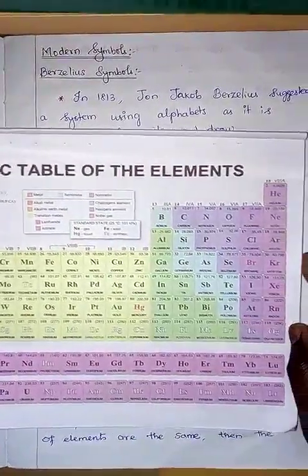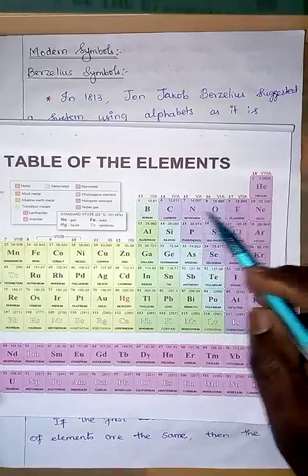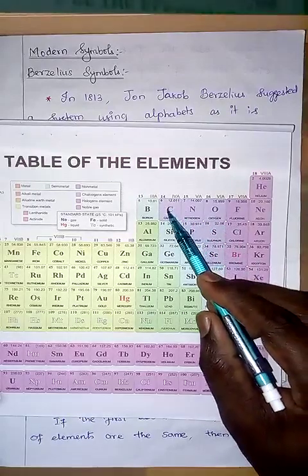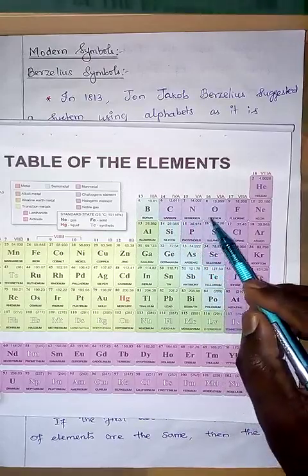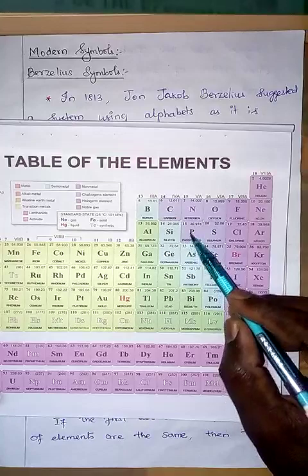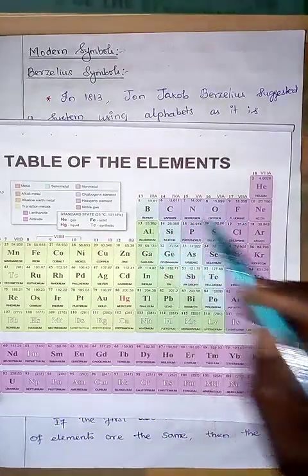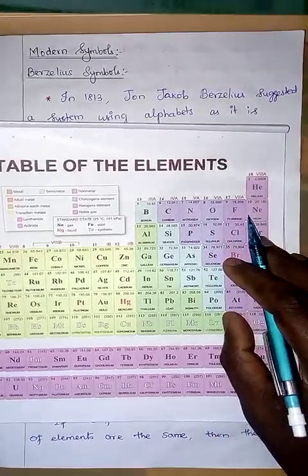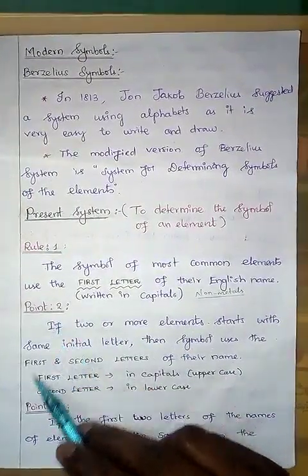Look at this modern periodic table. On your right-hand side you will find non-metals — the violet color area. Most non-metals have a single letter symbol, the first letter of the element name: carbon C, nitrogen N, oxygen O, fluorine F, phosphorus P, sulfur S, iodine I, boron B. Mostly non-metals have the first letter as their symbol.